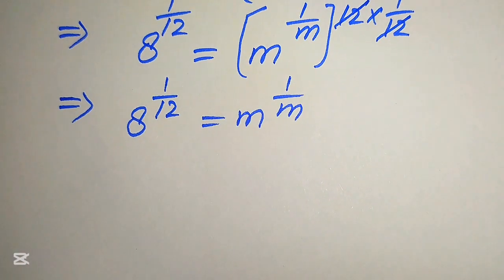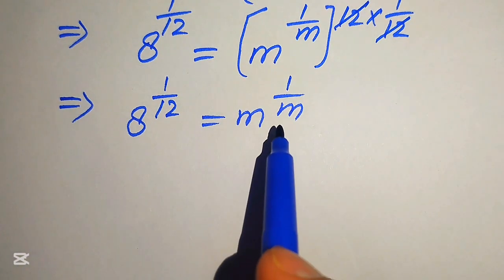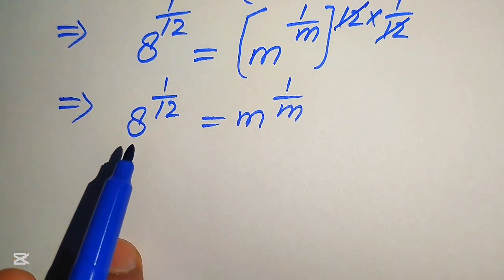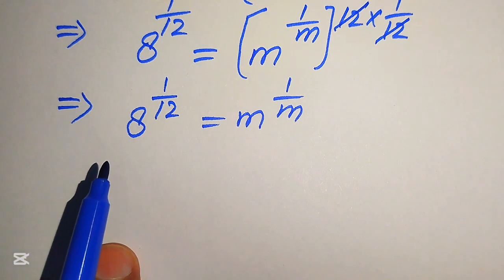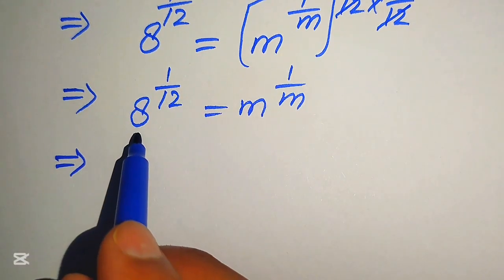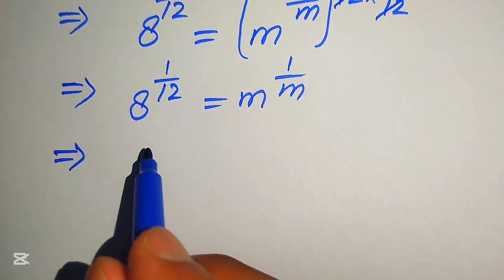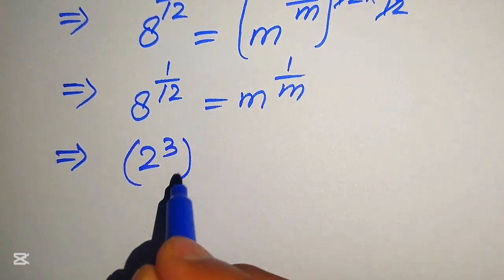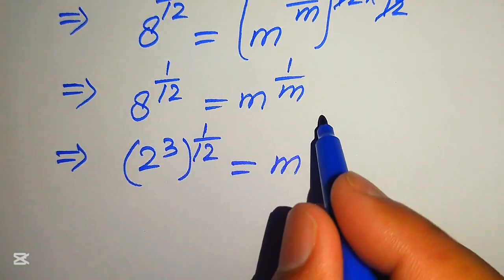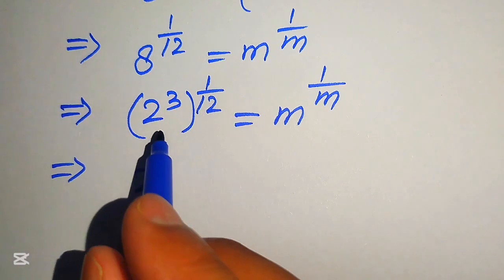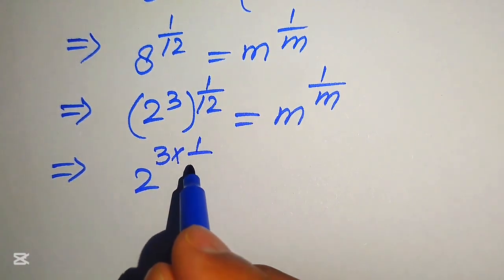We have moved variable terms to the right and constant terms to the left. Notice on the right hand side that the exponent is the reciprocal of its base. We need to make the same condition hold on the left hand side. So we work on the base 8, writing it as 2 cubed. Then 2 cubed to the power of 1 over 12 equals m to the power of 1 over m, and applying the exponent law the exponents multiply.